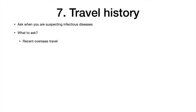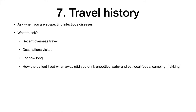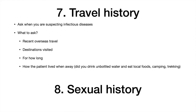Ask about travel history only when suspecting infectious diseases: recent overseas travel, destinations, duration of stay, and living conditions such as whether they drank unbottled water, ate local foods, or went camping or trekking — especially if suspecting mosquito-borne diseases. Ask about sexual history only when suspecting genitourinary symptoms or blood-borne diseases where the cause needs to be identified.